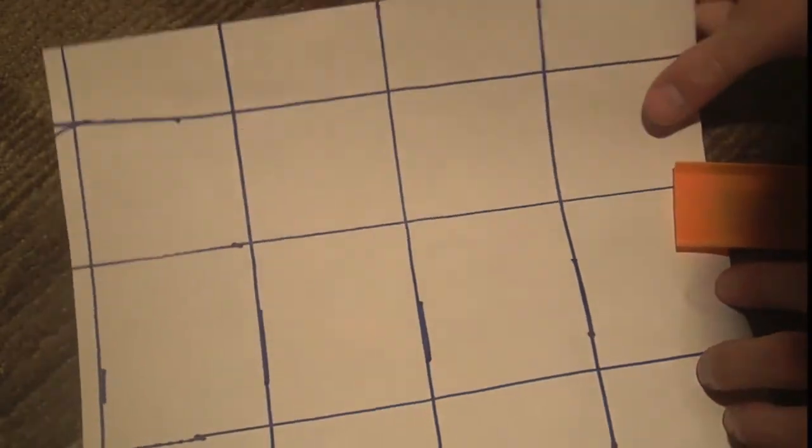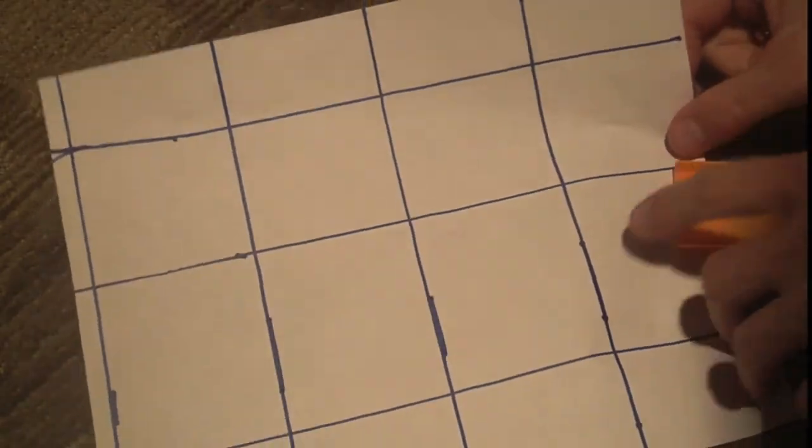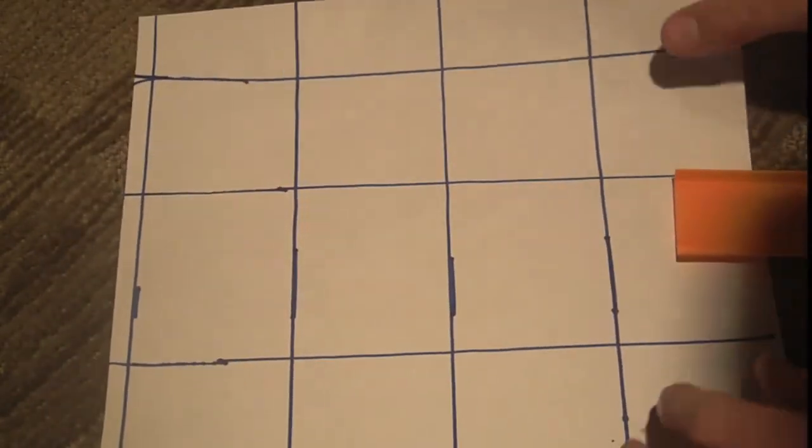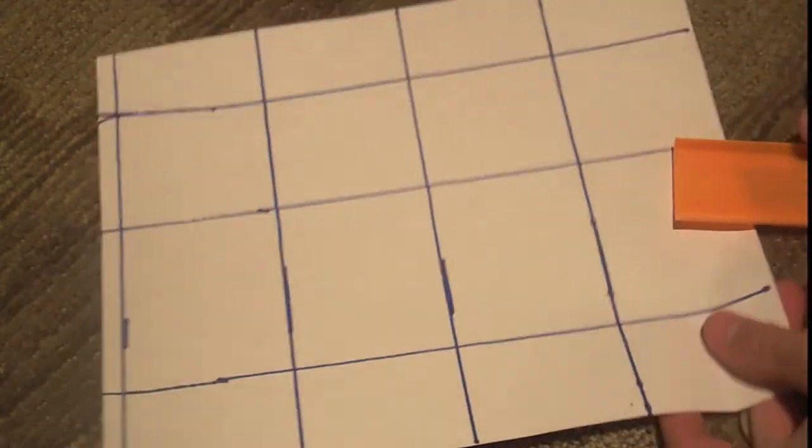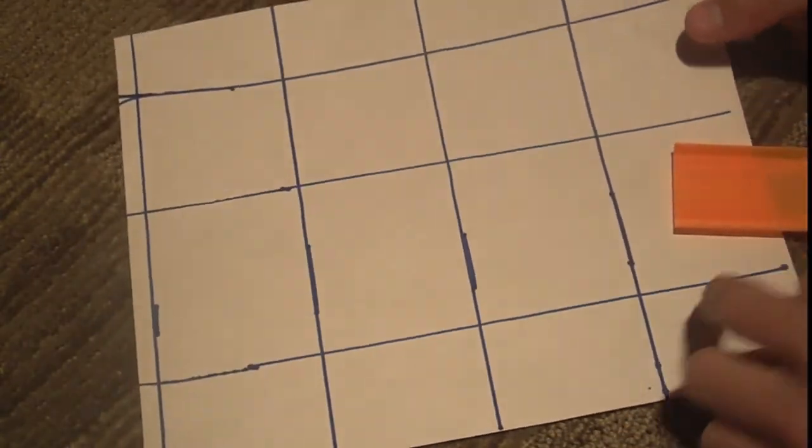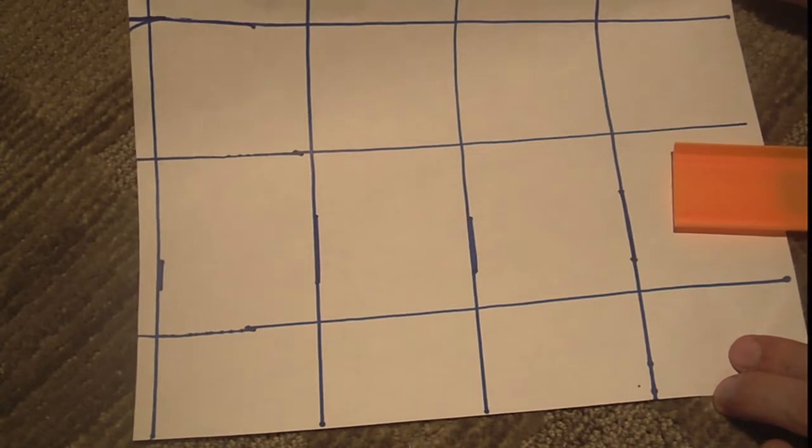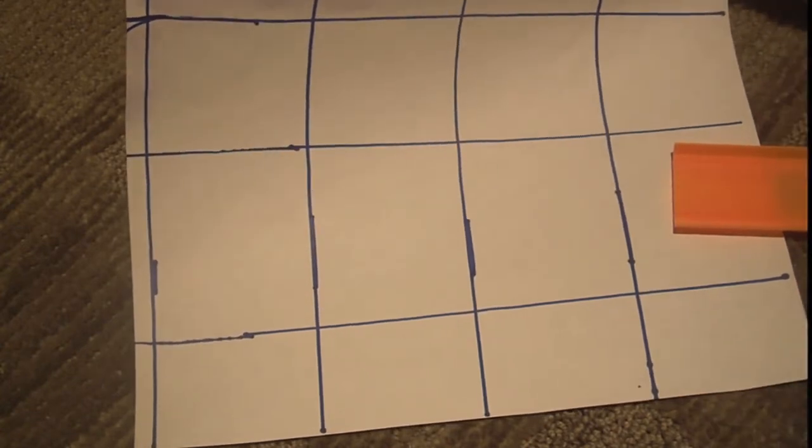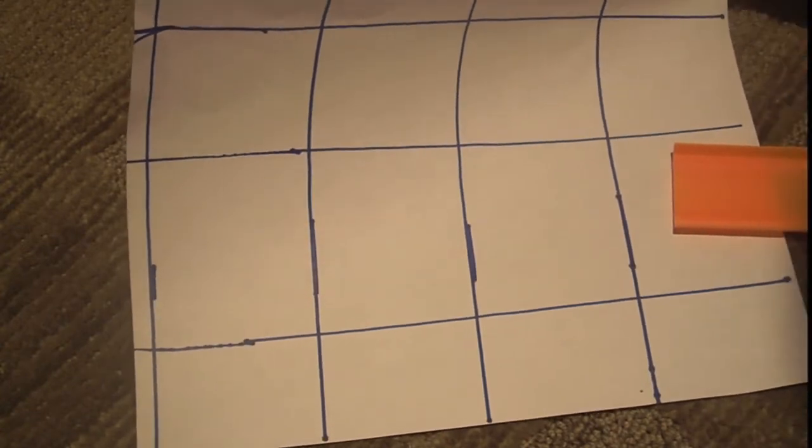However, you'll notice what happens if we actually curve the space-time a little bit. So if I can bend it correctly, it doesn't want to bend. But if we can curve the space-time like that, so the black hole is bending space-time.